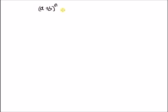Hello, welcome. In this short video, let us look at the proof of the binomial theorem from a probability theory perspective. Our goal is to prove that the binomial theorem, that is (a + b)^n is equal to the summation from k = 0 to n of n choose k multiplied by a^k multiplied by b^(n−k). This is the binomial theorem.